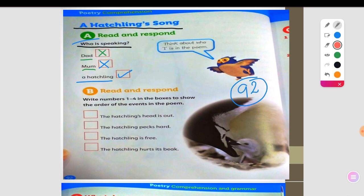Let's proceed to exercise B. Right here we are going to write numbers in the boxes to show the order of the events in the poem.